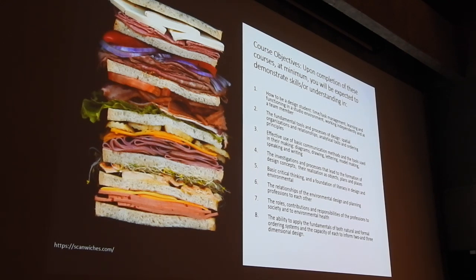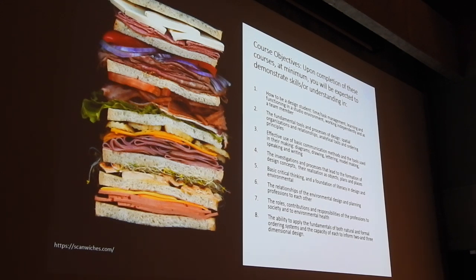Learning and working in a studio environment — how many of you were in a studio before? This is completely different from your high school English class. Working independently and as a team member. The fundamental tools and processes of design: spatial organizations and relationships, analytical tools and ordering principles. Effective use of basic communication methods: diagrams, drawing, lettering, model making, speaking and writing. All of this is going to be in the next project — the investigations and processes that lead to the formation of design concepts, their realization as objects, plans, and places.